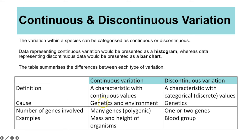Continuous variation is caused by genetics and interactions with the environment, whereas discontinuous variation is determined purely by genetics — your blood group, for instance, won't change because of the environment you live in. The number of genes involved also differs: continuous variation is usually polygenic, involving many genes and many alleles, whereas discontinuous variation is normally controlled by one, possibly two genes.